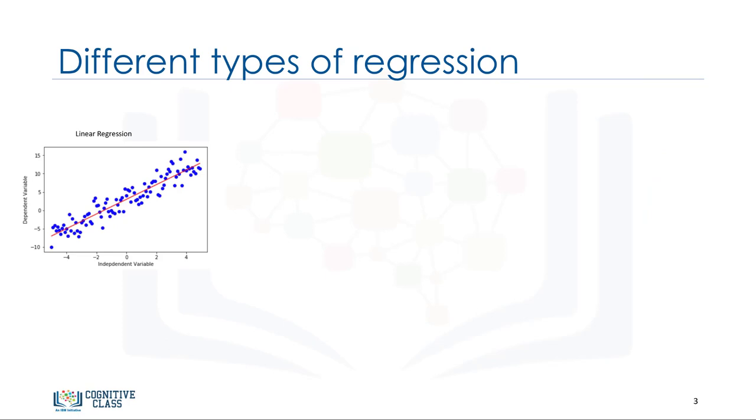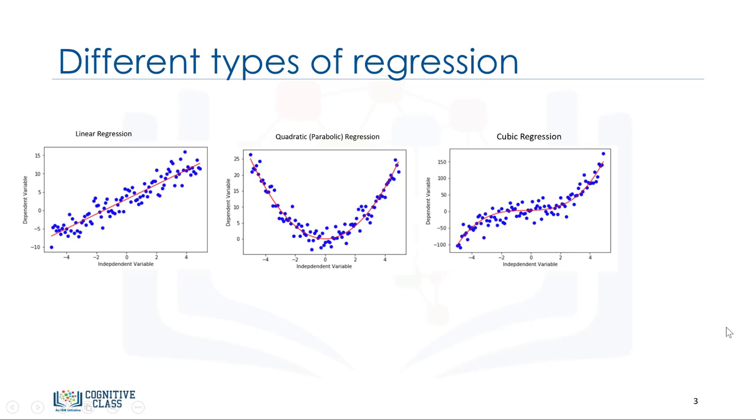In fact, many different regressions exist that can be used to fit whatever the data set looks like. You can see a quadratic and cubic regression lines here. And it can go on and on to infinite degrees. In essence, we can call all of these polynomial regression, where the relationship between the independent variable x and the dependent variable y is modeled as an nth degree polynomial in x. With many types of regression to choose from, there's a good chance that one will fit your data set well. Remember, it's important to pick a regression that fits the data the best.